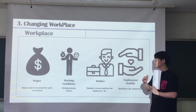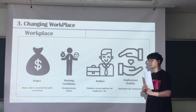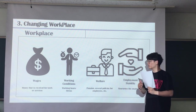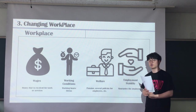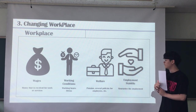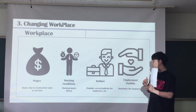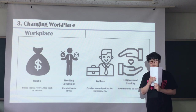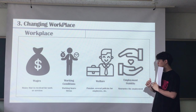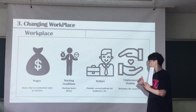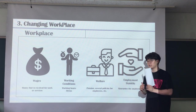The four things are: wages, working conditions, welfare, and employment stability. Wages is the money received for work or services. Working conditions include working hours, stress, and more. Welfare includes benefits and several services for employees. Lastly, employment stability gives a guarantee for employment — they will not be fired easily.